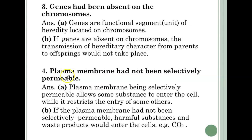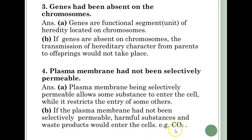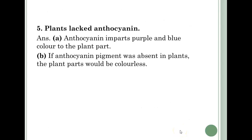Fourth question — Plasma membrane had not been selectively permeable. Answer A: Plasma membrane being selectively permeable allows some substances to enter the cell while it restricts the entry of some others. B: If the plasma membrane had not been selectively permeable, harmful substances and waste products would enter the cells — for example, carbon dioxide (CO2).